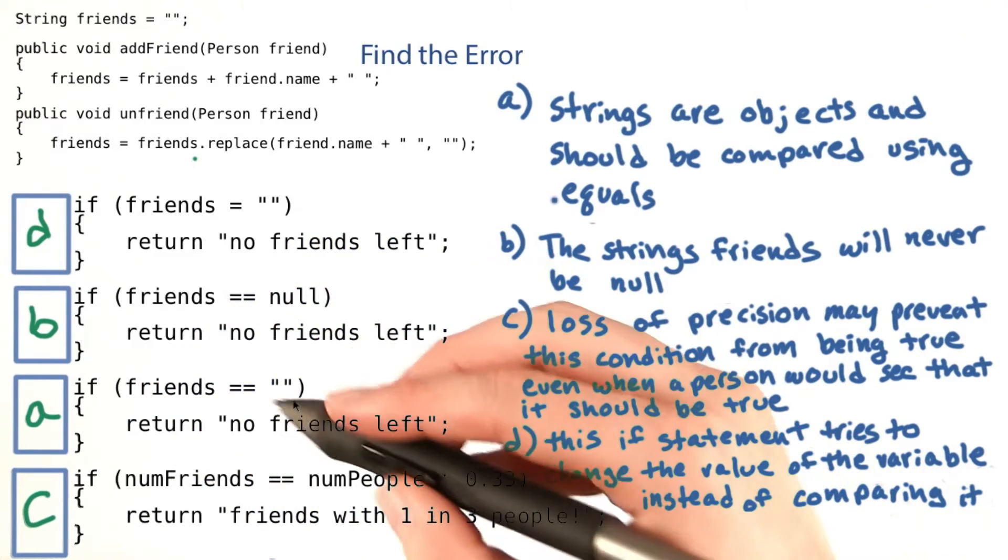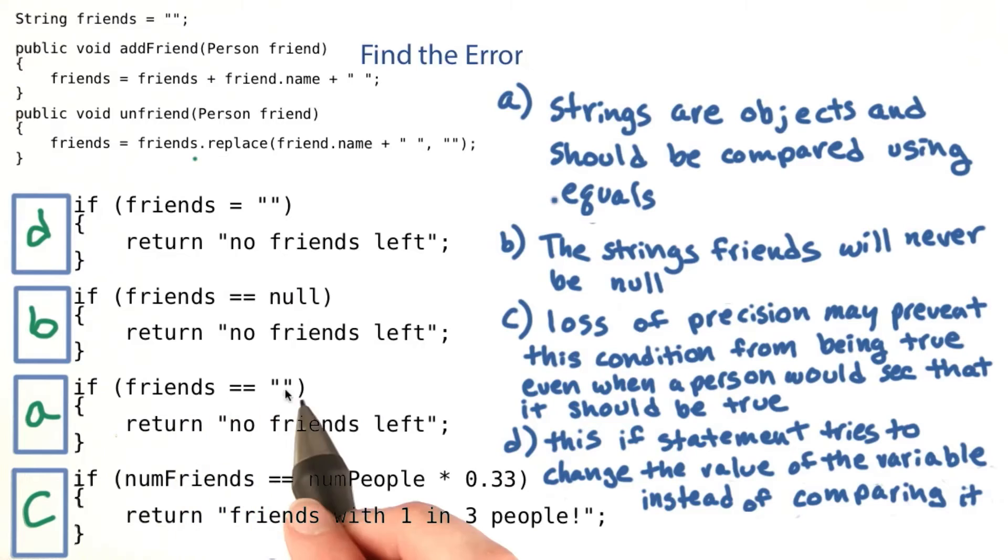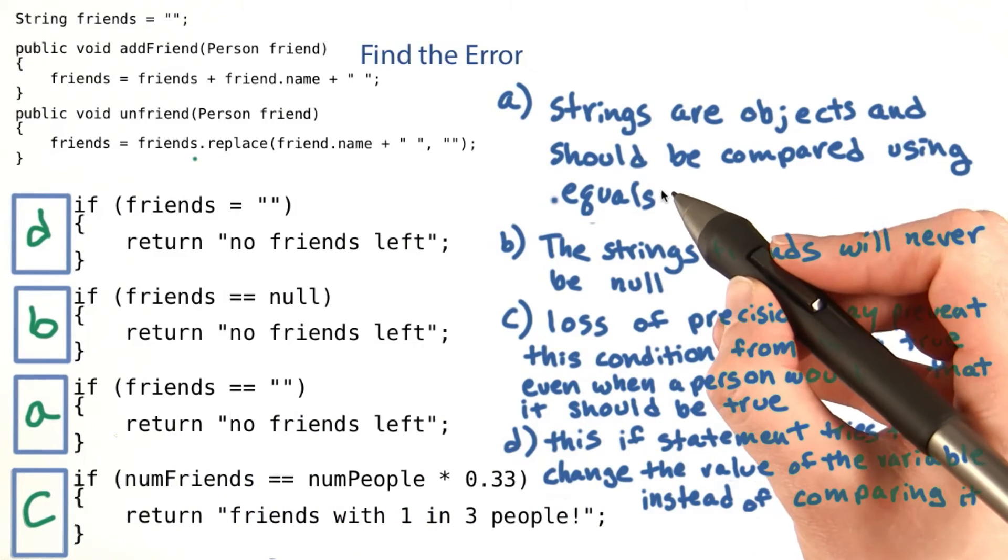In this third one, we're comparing using equals equals. But strings are objects, so we always want to use dot equals to compare them.